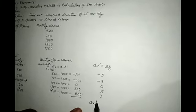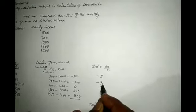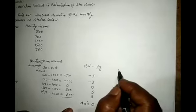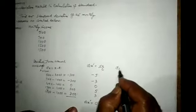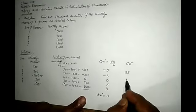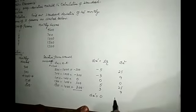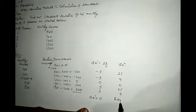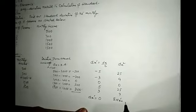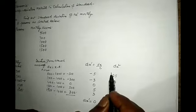Now accordingly, we see that summation of dx dash is equal to 0. dx square, this will be 25, 9, 0, 25 and 9. Summation of dx dash square is equal to 68.